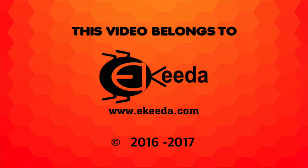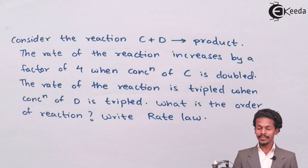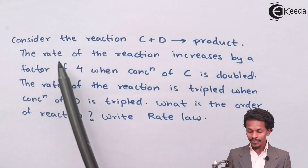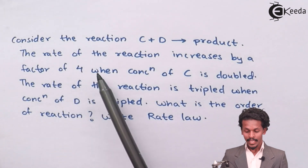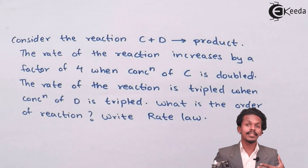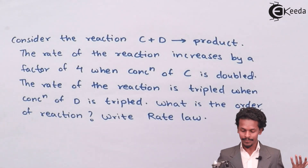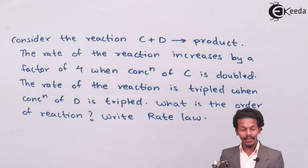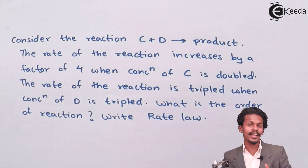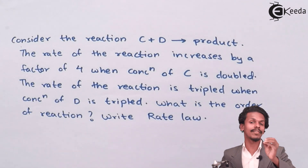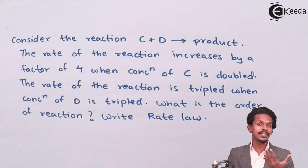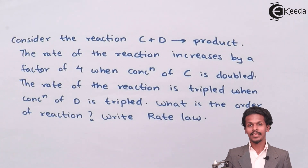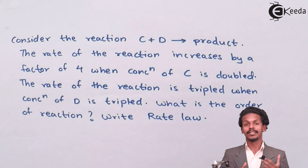Let us look at these critical questions. The question says that for the reaction C plus D giving product, the rate of the reaction increases by a factor of 4 when the concentration of C is doubled. Also, the rate of the reaction is tripled when the concentration of D is tripled. We need to find the order of reaction and write the rate law. To solve this, we need to calculate the values of X and Y, which will let us determine the order of reaction and the rate law.